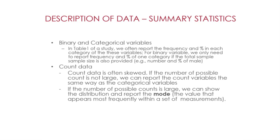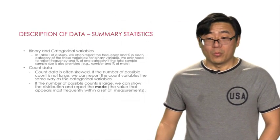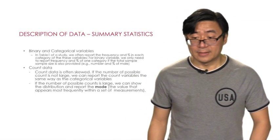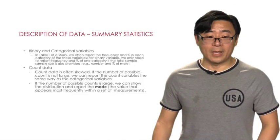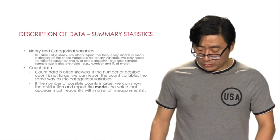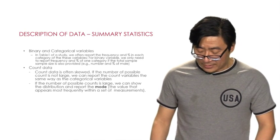For binary and categorical variables in Table 1, we report the frequency and percent in each category. Specifically for binary variables, we can report just the frequency and proportion of one category if the total sample size is also provided. For example, if a study includes male and female, and the total sample size is reported, we only need to report the frequency and proportion of male — people can automatically calculate the corresponding values for female.